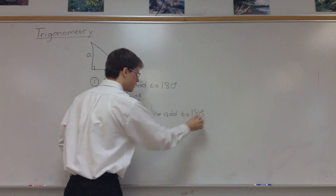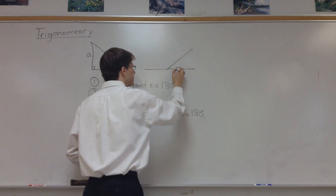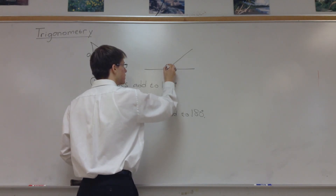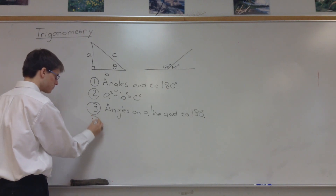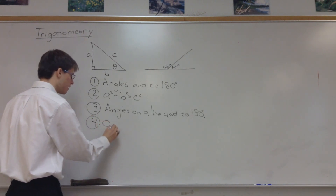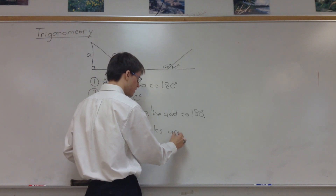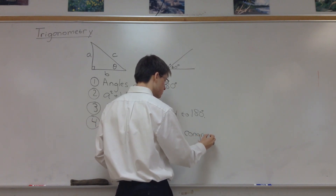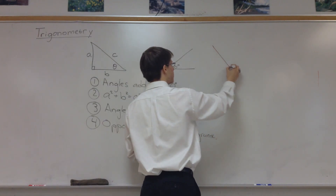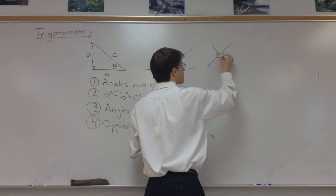To give an example of angles on a line adding to 180 degrees: if I have a line going this way and a line cutting across it, those two angles need to add to 180. So maybe one is 120 degrees and the other is 60 degrees. The fourth and final rule is that opposite angles are equal — we say they are congruent. For example, when two lines form an X, opposite angle pairs are equal to each other.